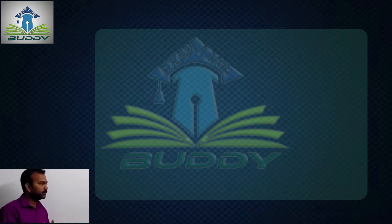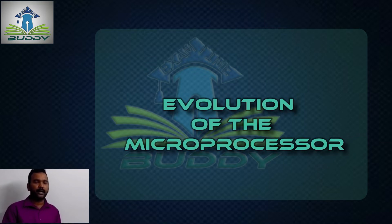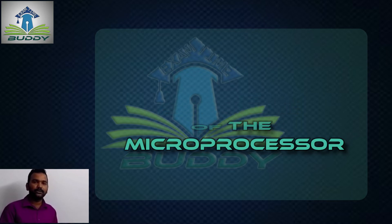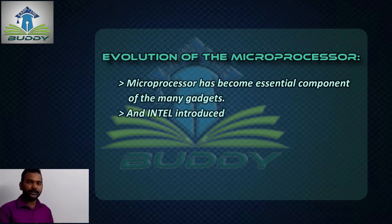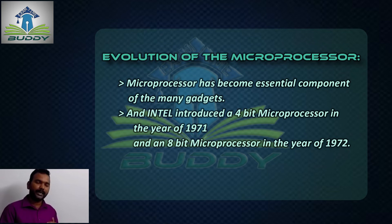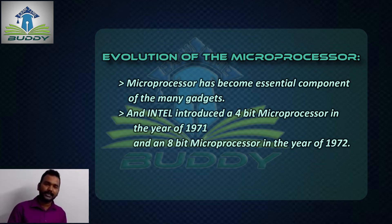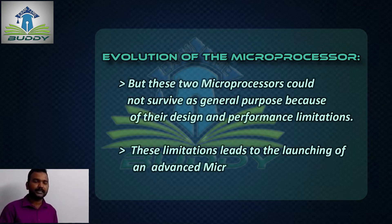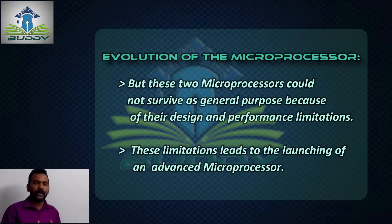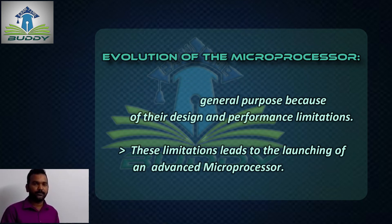Next we will move on to the evolution of the microprocessor. The microprocessor has become the most essential component of many systems. Intel introduced a 4-bit microprocessor in the year 1971 and an 8-bit microprocessor in the year 1972. However, these two microprocessors could not survive as general purpose because of design and performance limitations, which led to the launching of an advanced microprocessor.